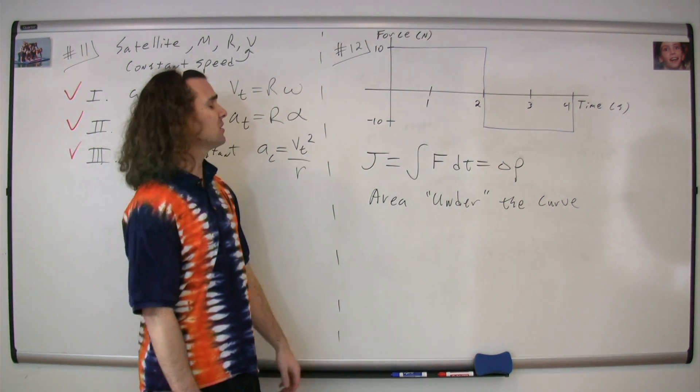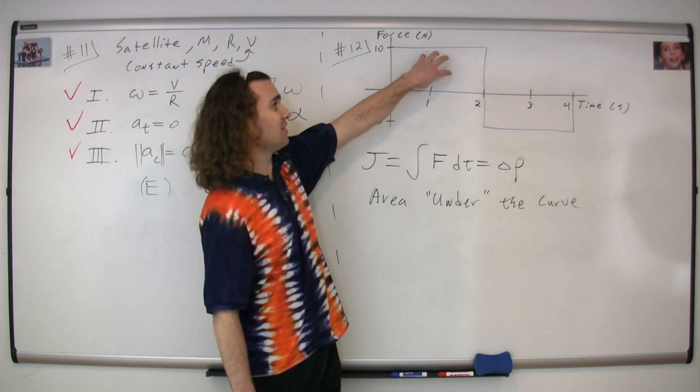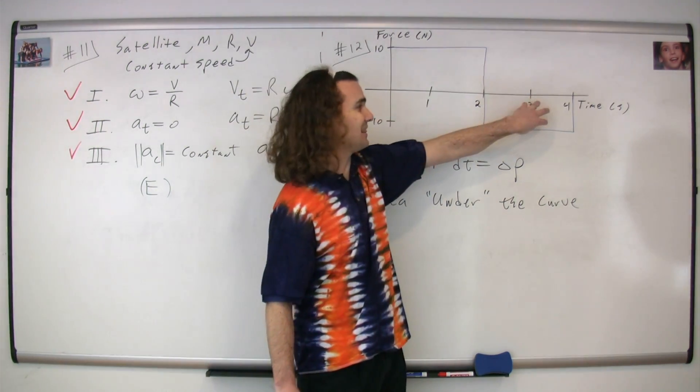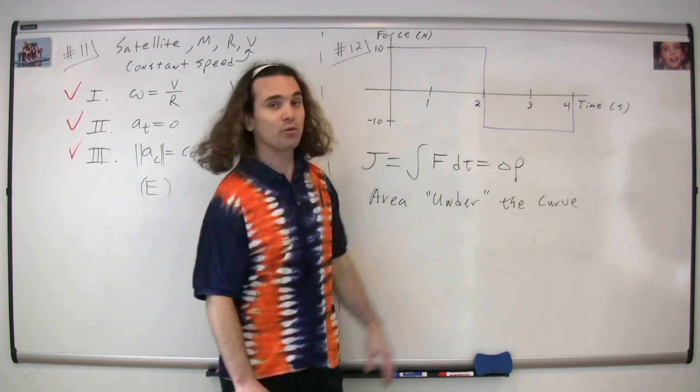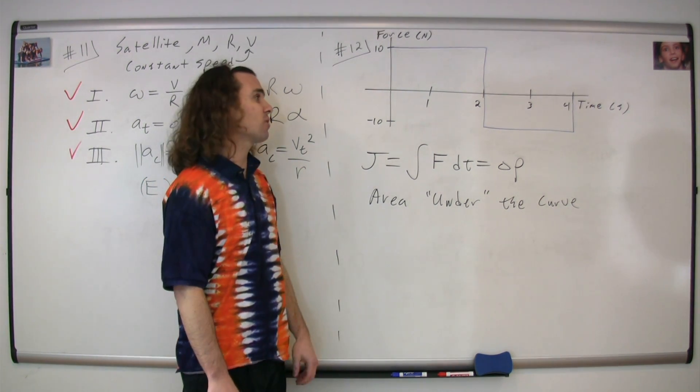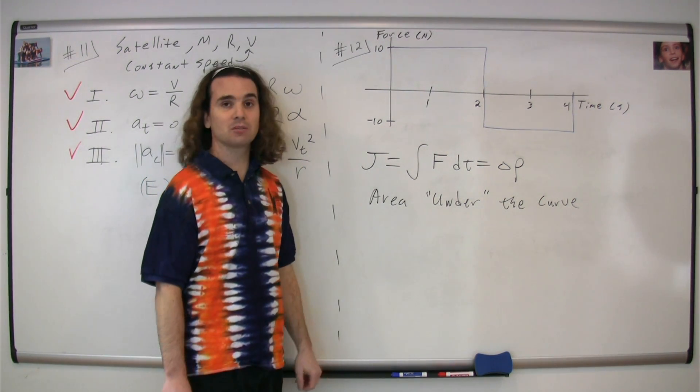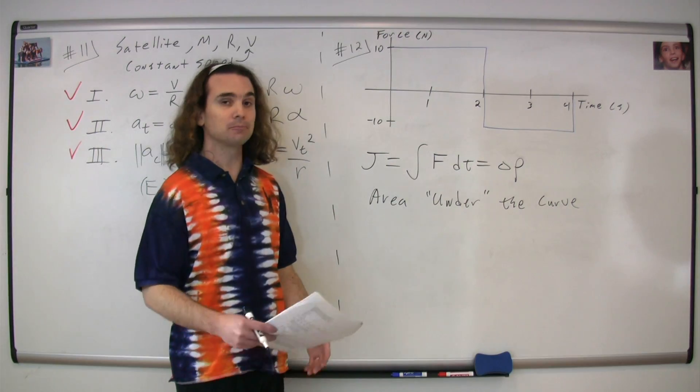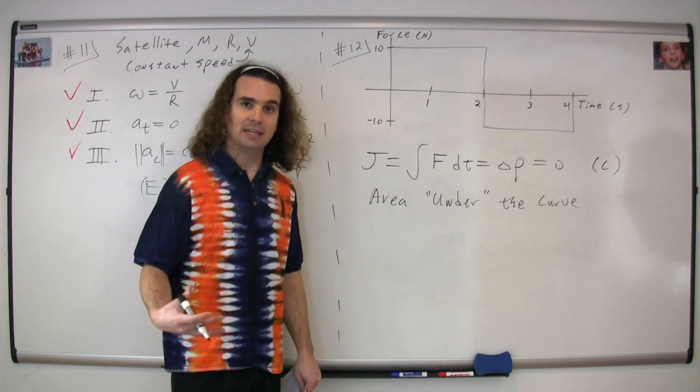You should be able to look at this problem and identify that this area is positive and this area is negative. Both rectangles are the same exact size, and therefore the total impulse in this problem adds up to zero. The correct answer is C.